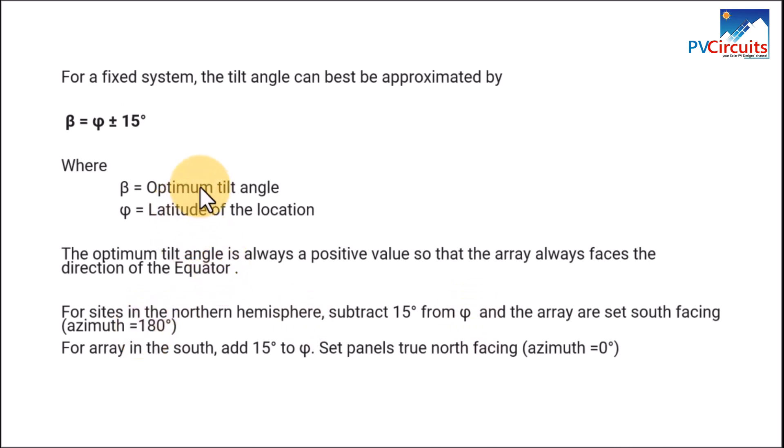Actually azimuth, as you've seen, is a compass direction. And for array in the south, add 15 degrees to the equation so this part becomes positive. So set the panels facing true north, azimuth is equal to zero as we see here.